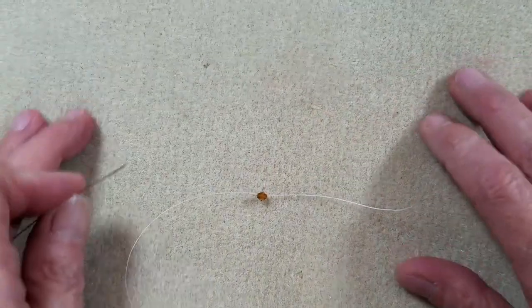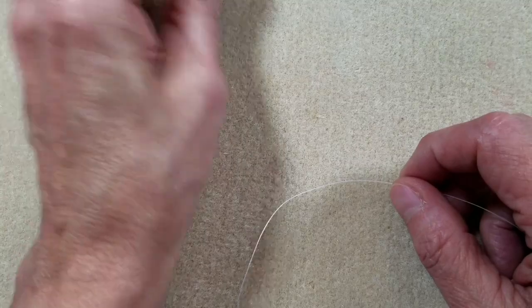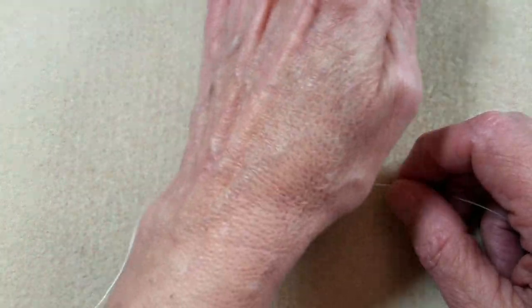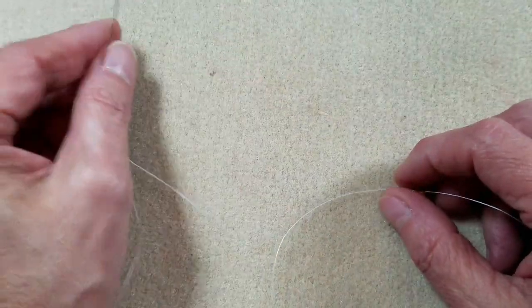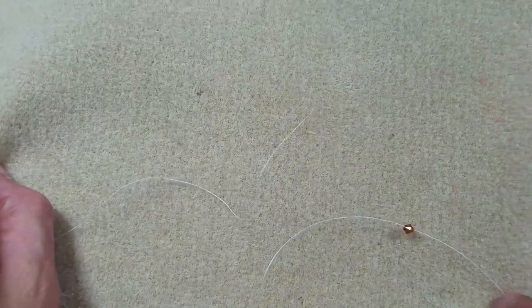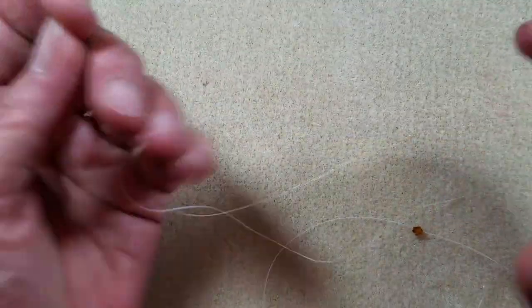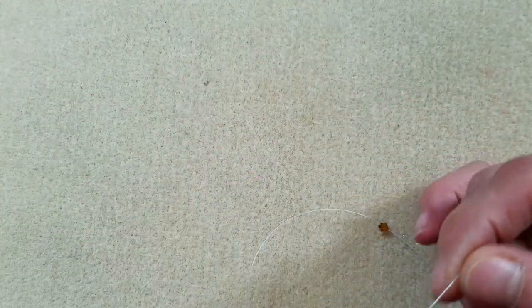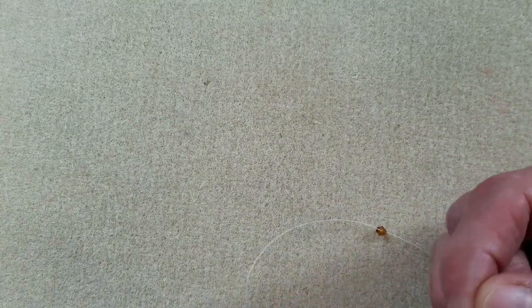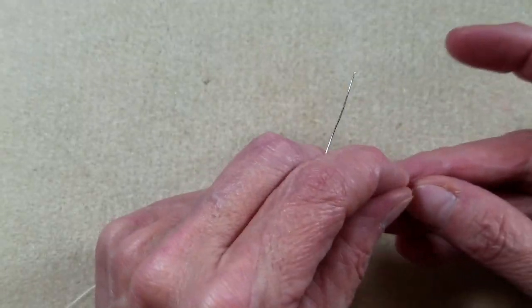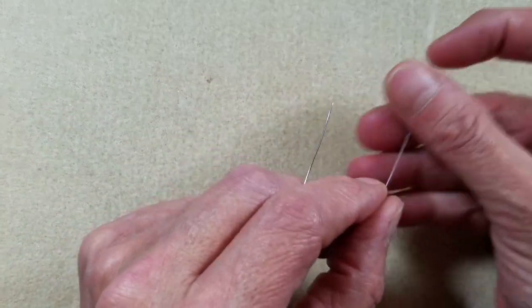In peyote we're going to start by picking up all the beads that we need for the first two rows. I know that's kind of confusing, but when you see how the stitch works, as you add your next set of beads you're actually creating your third row. Let's go ahead and look at that.